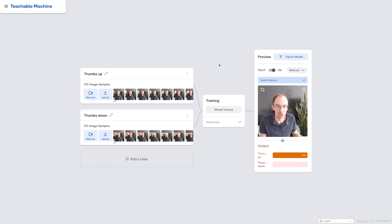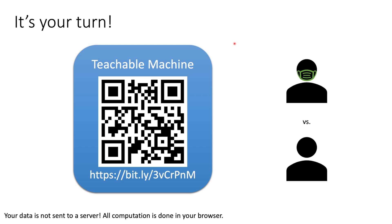Now it's your turn. Try Teachable Machine for yourself — for example, classify whether you're wearing a mask or not, which could be useful for applications checking if someone can enter an event. Other examples are also possible, such as classifying objects in your room. You can add additional classes and just try it out. Play around with the data, see where your classifier works well and where it fails, and how you can adjust the training data to serve your purposes.